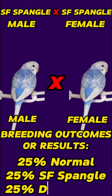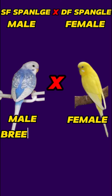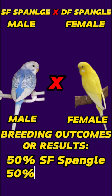Fourth pairing: the male is a single-factor spangle budgie and the female is a double-factor spangle budgie. The breeding outcomes or results are 50% chicks are single-factor spangle and 50% chicks are double-factor spangle budgies.